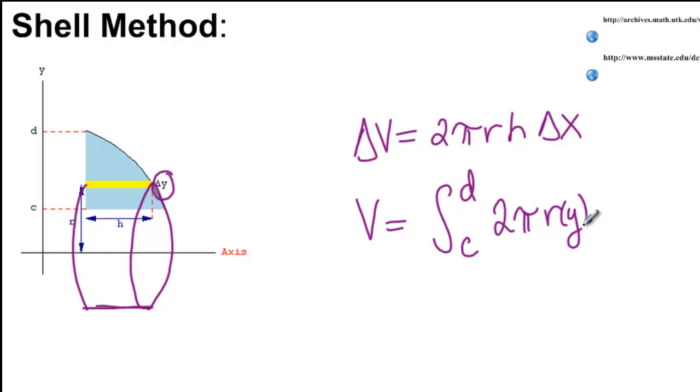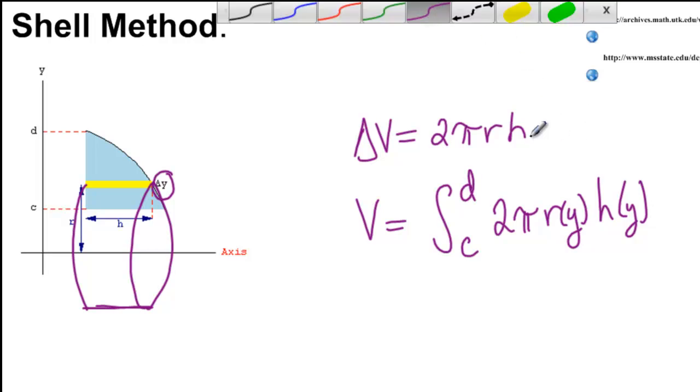Now r is given in terms of y, h is given in terms of y, this is supposed to be a delta y. That's the whole point, dy.